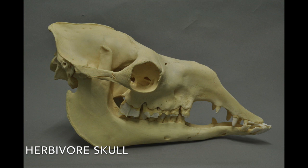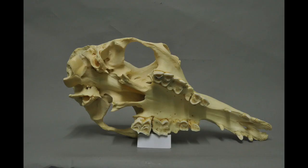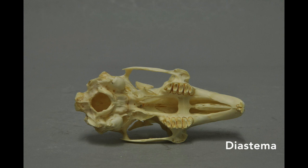For example, herbivores such as this camel have a broad rounded jaw to attach strong muscles for chewing and grinding plant material. Their molars and premolars are often flat. Canine teeth are often small or absent and incisors can be long and capable of clipping and shearing vegetation. There is also typically a gap called a diastema between the incisors and premolars.